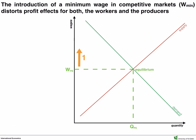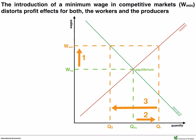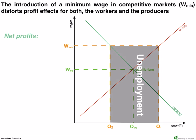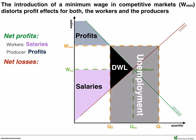A higher minimum wage rate results in more workers willing to work on the market, so the quantity supplied shifts to Q1. However, the total market's employee demand shifts to Q2 to set the new market equilibrium of the minimum wage rate and quantity demanded. The result is unemployment and deadweight losses. Ironically, the minimum wage initially intended to help workers actually results in more workers without a job.